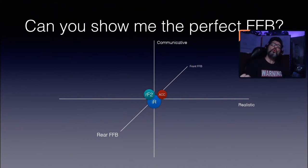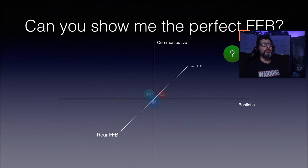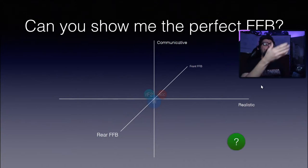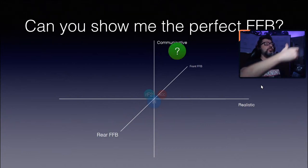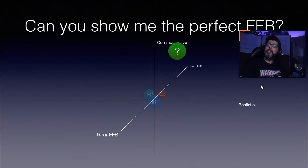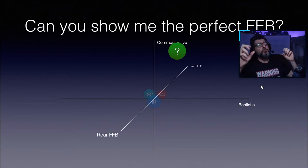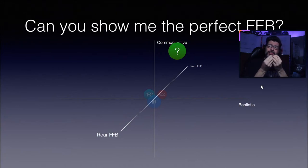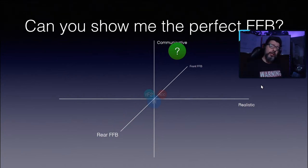So the question is: where is the perfect force feedback for you? Is it there — more realistic, more feeling of rear wheel feedback? Or is it over there — less realistic but more communicative? Because some people say force feedback has to be more communicative to compensate for the lack of G-forces from a real car. So where is the perfect force feedback? It doesn't exist. For each one of us it's different, and why is that?